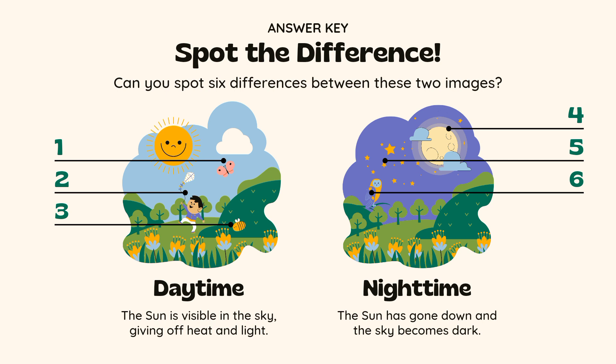Daytime: the sun is visible in the sky, giving off heat and light. Nighttime: the sun has gone down and the sky becomes dark.